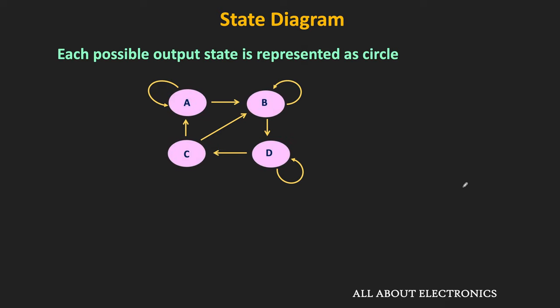In the state diagram, every possible state is represented as a circle. For example, in the given state diagram we have total four possible states, so all the states are represented in circles. To differentiate all the different states, each state is assigned a specific value. Each state is represented with a different character, but typically each state is assigned a binary value. Since we have four states, each state is represented with two-bit numbers.